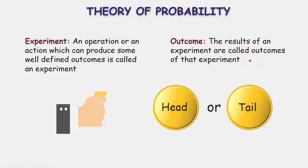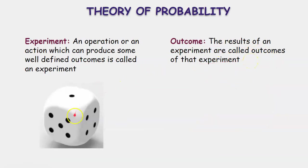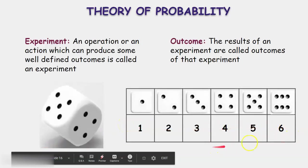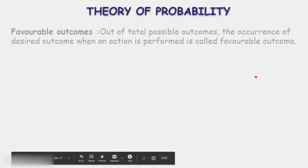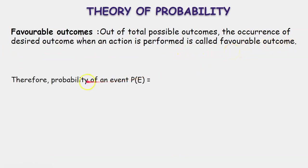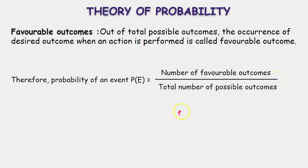Throwing a die is an experiment, and getting 1, 2, 3, 4, 5, or 6 are all possible outcomes of that experiment. Now, what are favorable outcomes? Out of total possible outcomes, the occurrence of a desired outcome when an action is performed is called favorable outcomes. Therefore, the probability of an event, represented as P(E), is equal to the number of favorable outcomes divided by the total number of possible outcomes.